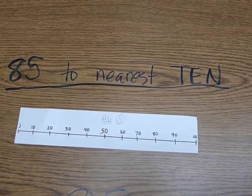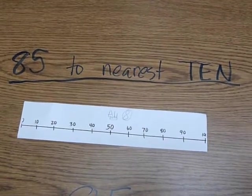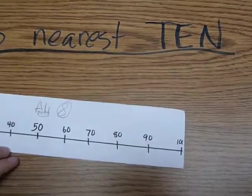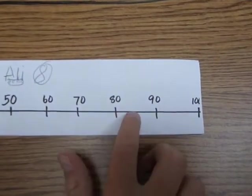Today we are going to round 85 to the nearest 10. If you look on this number line, in between 80 and 90, there is 85.